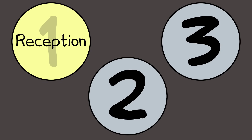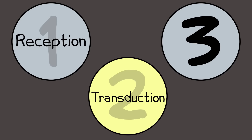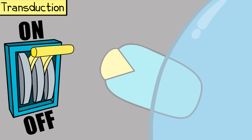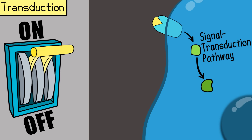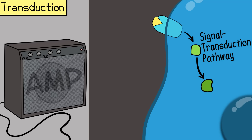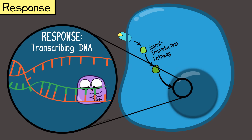Let's talk about the general sequence of cell signaling. First, reception — a signal molecule binds a receptor. Second, transduction — the receptor gets activated by this binding, which often means the receptor will change its shape. It could even involve a whole series of molecules changing their conformation in something called a signal transduction pathway, which can amplify the original signal. Third, response — there is some kind of response that happens, such as a portion of DNA found in the nucleus getting transcribed.